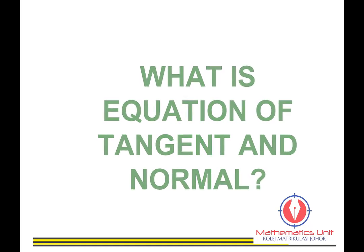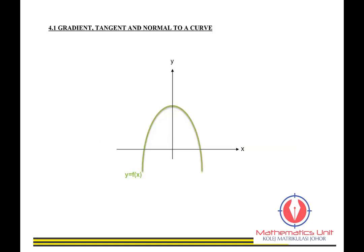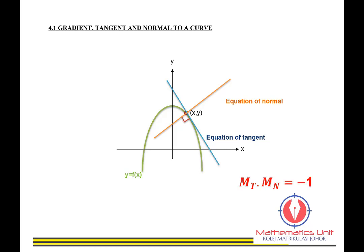What is the Equation of Tangent and Normal? Say you have a curve y equals f(x) and a point on the curve (x, y). The Equation of Tangent is a straight line that touches the curve at one point only. The Equation of Normal is a straight line that is perpendicular to the tangent. The relationship between them is based on their gradients: Gradient of Tangent times Gradient of Normal equals negative 1.